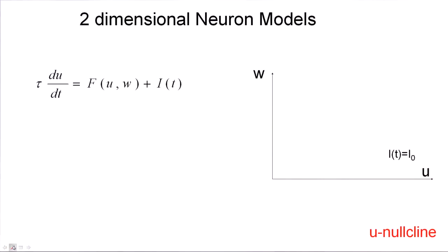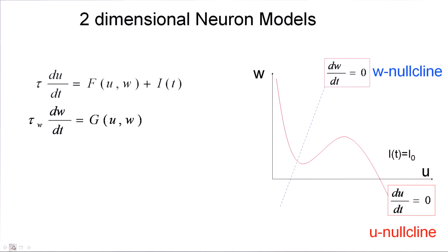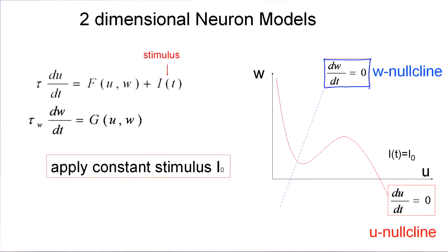So let's start the discussion with our two-dimensional neuron model, and we have seen for the FitzHugh-Nagumo model that the w-nullcline would be a straight line, while the u-nullcline, the red nullcline, would have some more interesting shape. Now let's apply a stimulus. Let's apply a constant stimulus. A constant stimulus, as we have seen for the FitzHugh-Nagumo model, will shift up the curve.